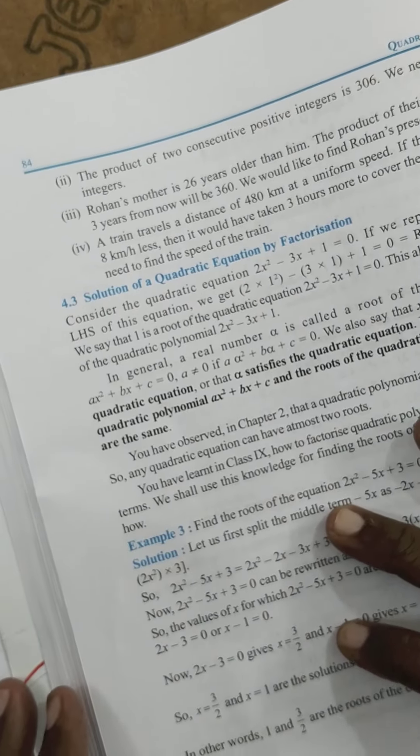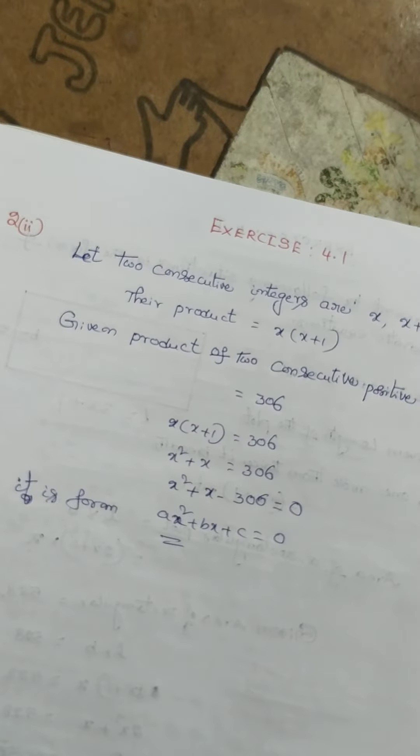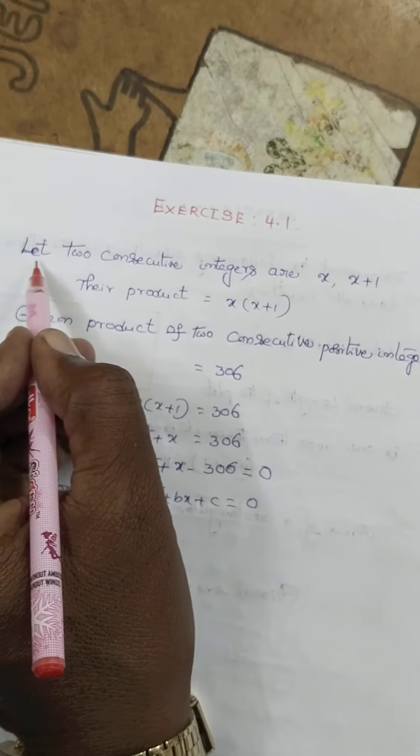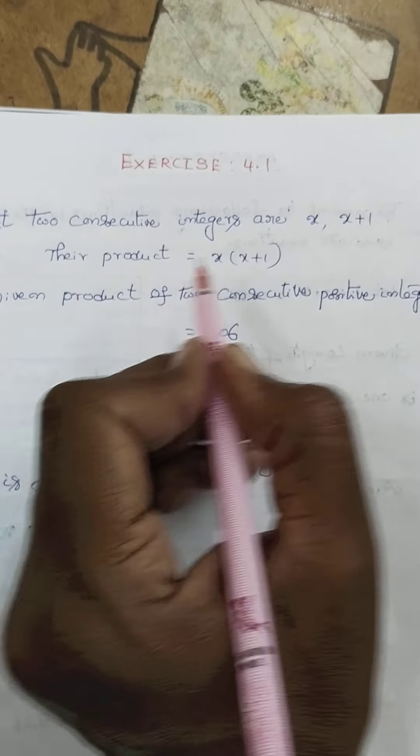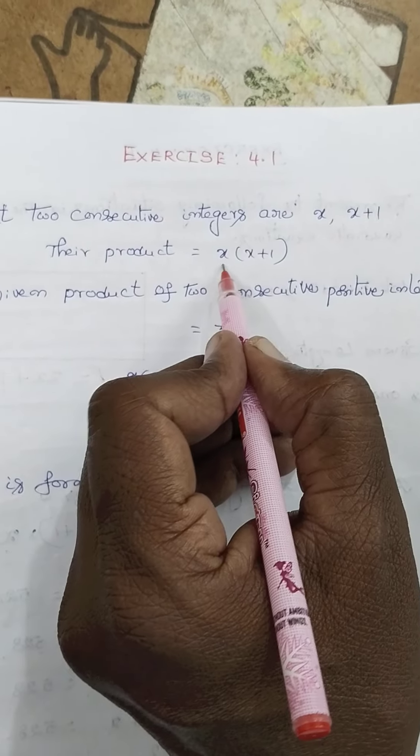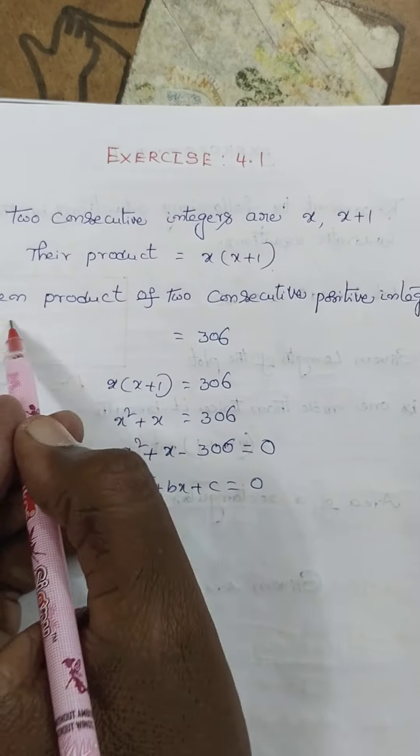To find integers whose product is the given number, we form a quadratic equation. Let the two consecutive integers be x and x plus 1. Their product, which is the multiplication, is x into x plus 1.